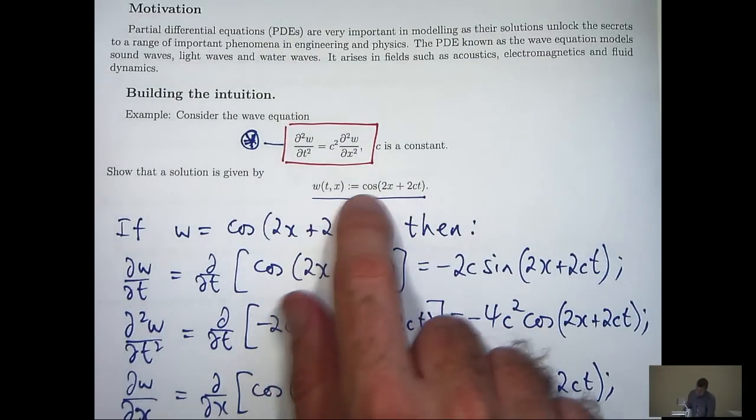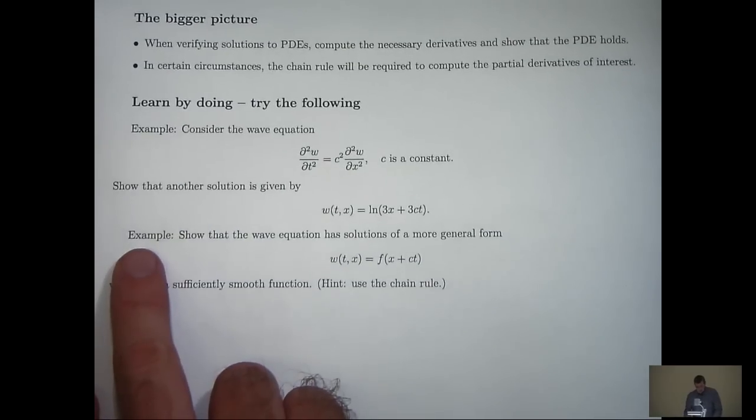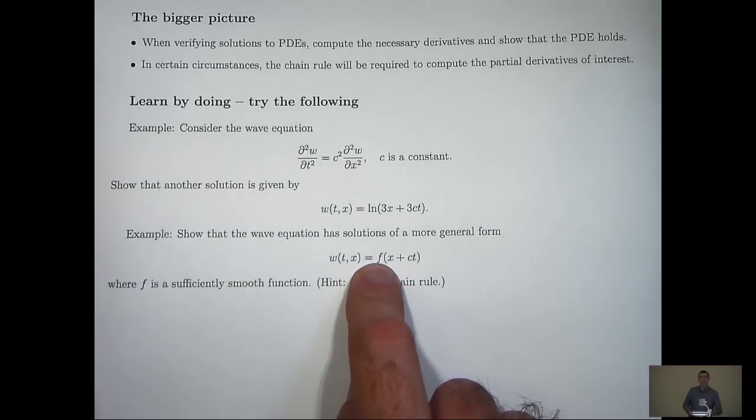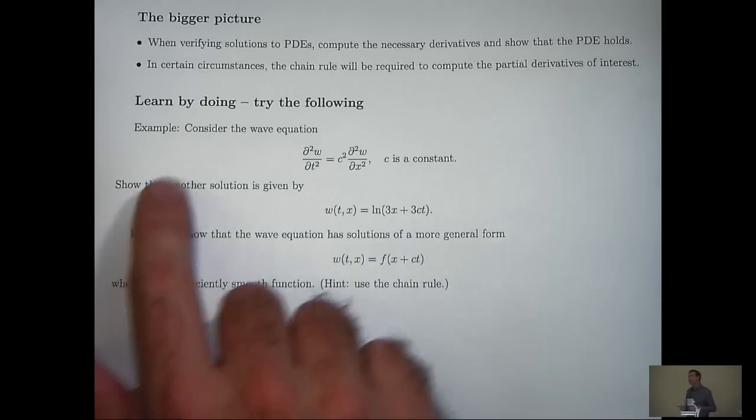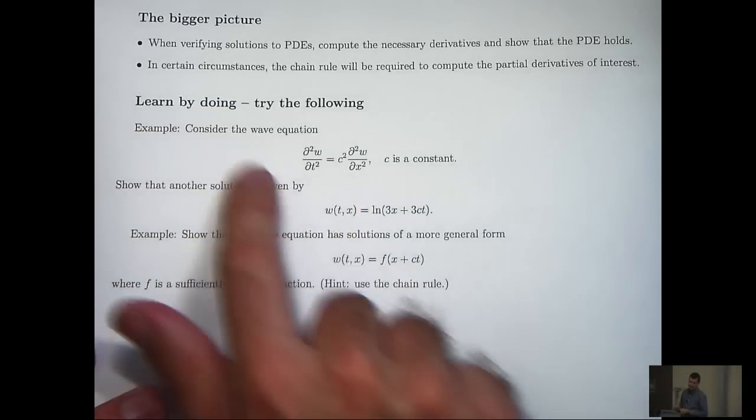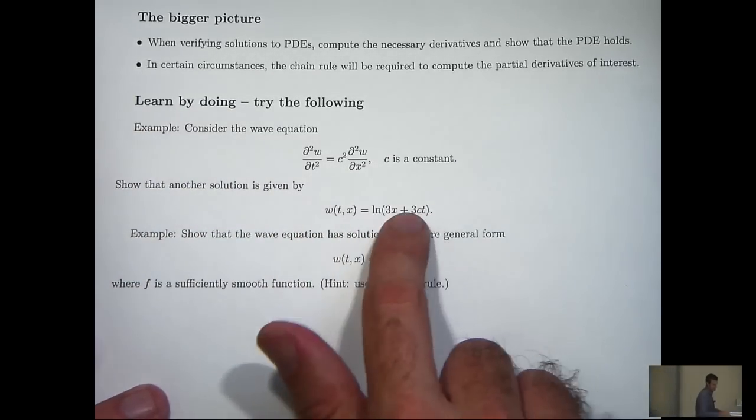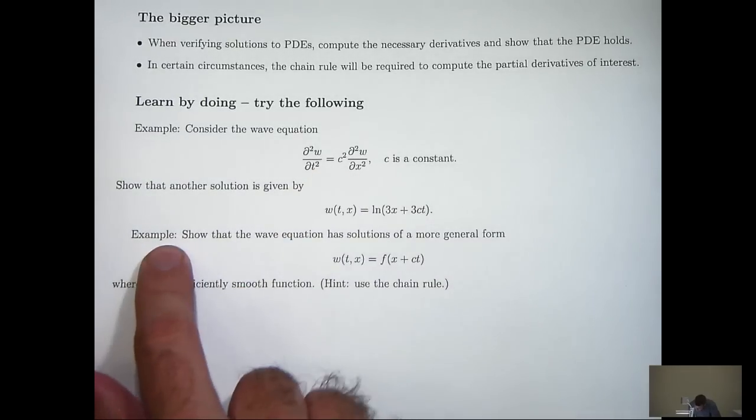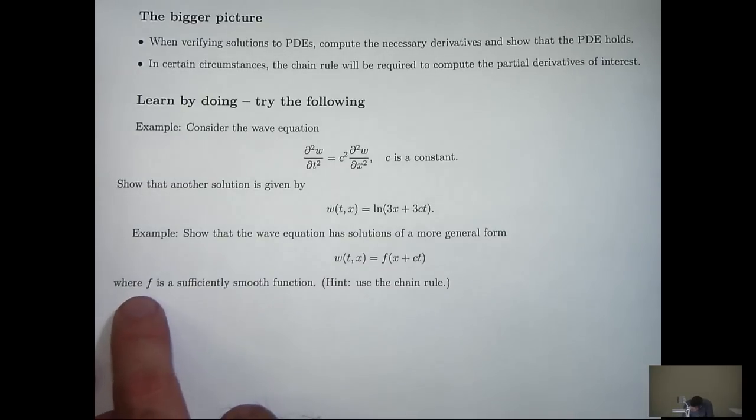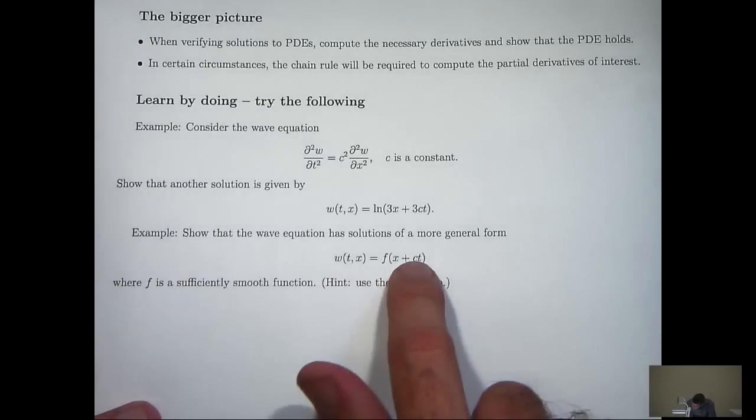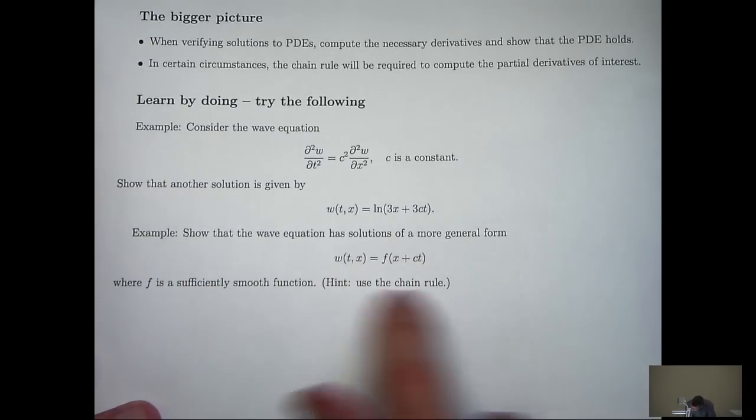This function here, it's easy to compute the derivatives. But I've given an example down here where the f is unknown. The only way you're going to be able to compute the partial derivatives here is to use the chain rule. But first, I want you to understand that you need to learn maths by doing maths. You don't get good at maths just by watching videos. So I've given you two examples here. Here's a very basic one showing that this particular function also is a solution to the wave equation. And then a slightly harder example showing that this more general form where f has continuous derivatives, this general form is also a solution to the wave equation. And I've given a hint, use the chain rule.